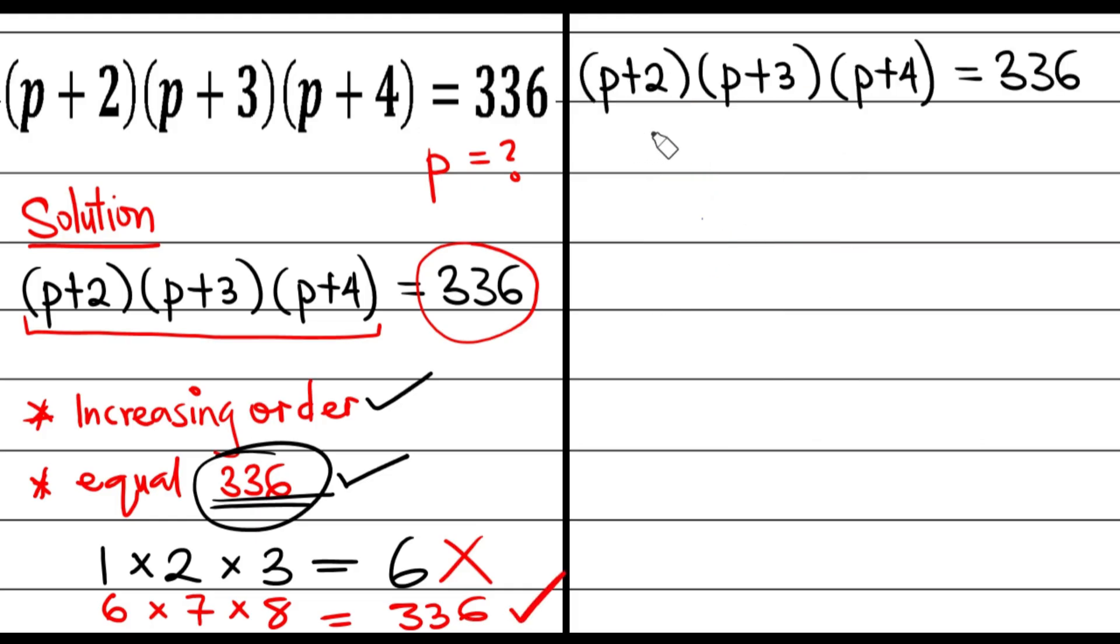Therefore, if I put that here carefully, I'm going to say p plus 2 is just referring to 6, multiplied by p plus 3 is referring to 7, multiplied by p plus 4 is referring to 8. Of course, multiplying this together is going to give me the same 336. Therefore, at the end of the day, I can conclude that p plus 2 is just equal to 6, and I'll write p plus 2 equals 6 and p equals 6 minus 2. At the end of the day, p just equals 4.